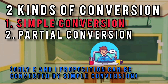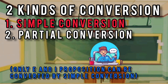Remember that there are only two symbols or types of proposition that have simple conversion — only E and I. If the convertent is E, the converse must also be E — universal negative to universal negative. If the convertent is an I proposition, the converse must also be an I proposition. That is simple conversion.